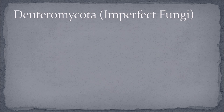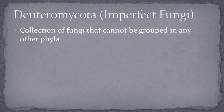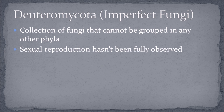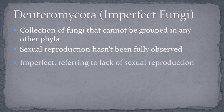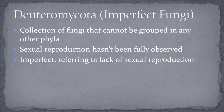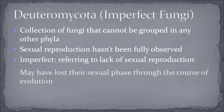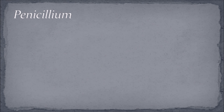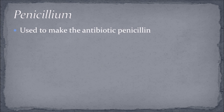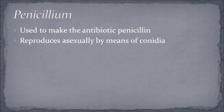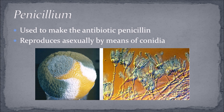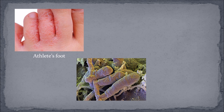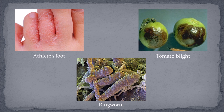The last phylum is deuteromycota, or imperfect fungi. These are a collection of fungi that cannot be grouped in any other phyla as their sexual reproduction hasn't been fully observed yet. Some deuteromycetes are related to ascomycetes. The term 'imperfect' refers to the lack of observed sexual reproduction, and some mycologists hypothesize they may have lost their sexual phase through evolution. The best-known deuteromycete is the fungus penicillium, used to make the antibiotic penicillin. Other examples include athlete's foot, ringworm, and tomato blight.